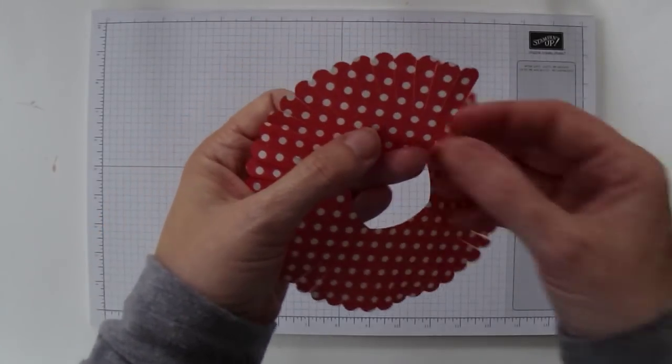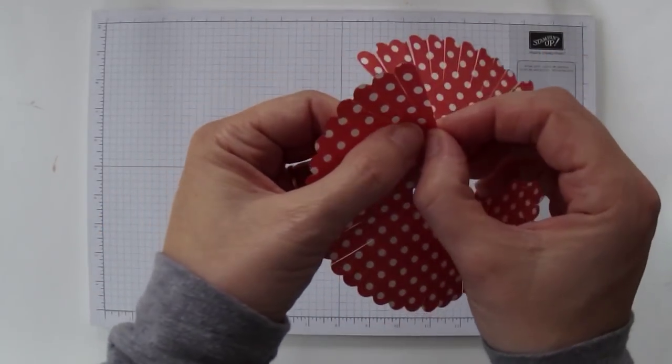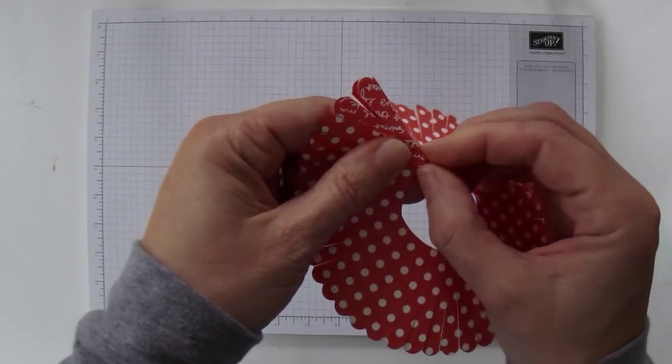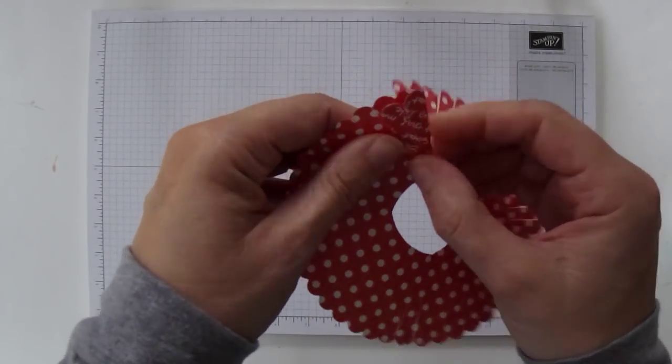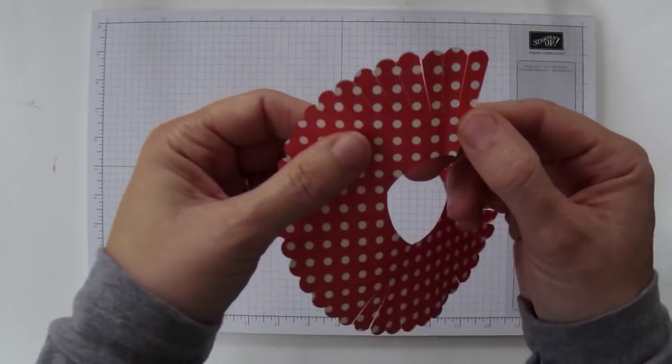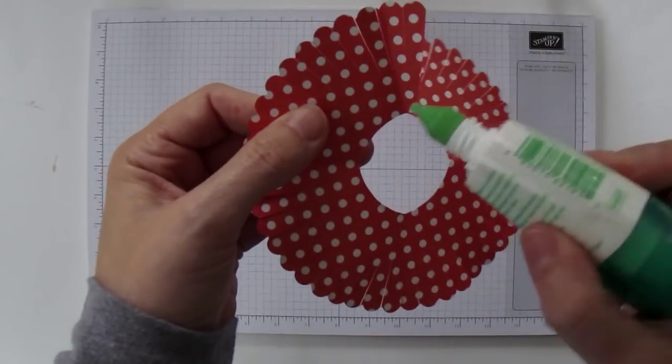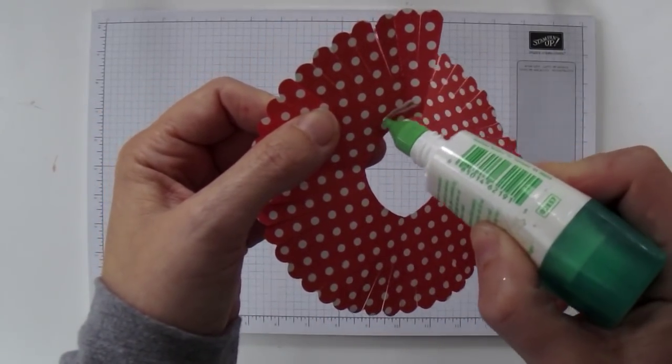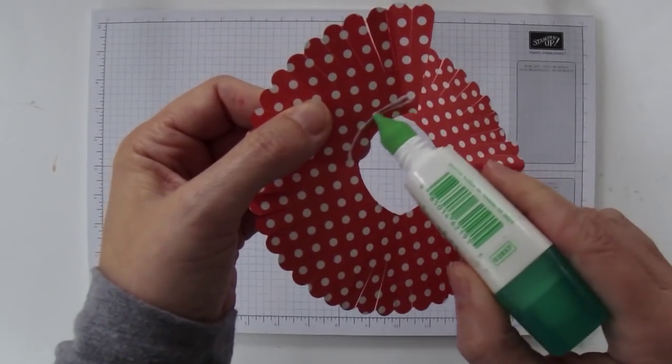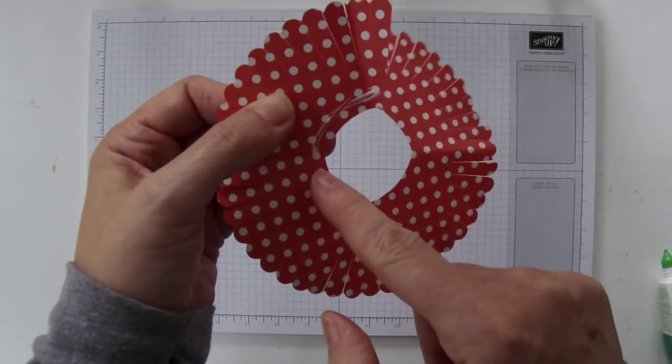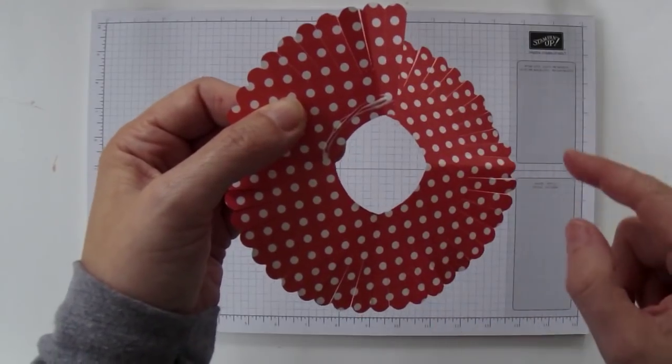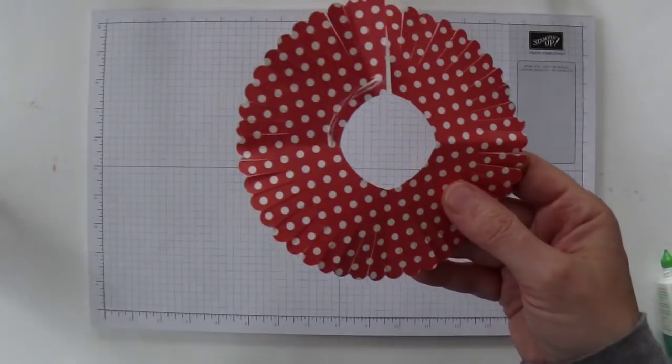So then we're going to take one end and I'm just going to bend over that piece just as a little starter piece to hook my stem into. And then I'm going to take some Tombow and do about a quarter of the circle. I find if I put Tombow all the way around to begin with, my fingers get into it.